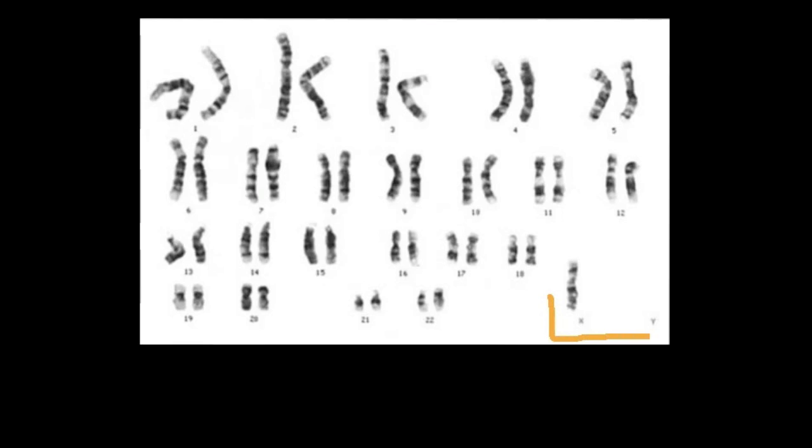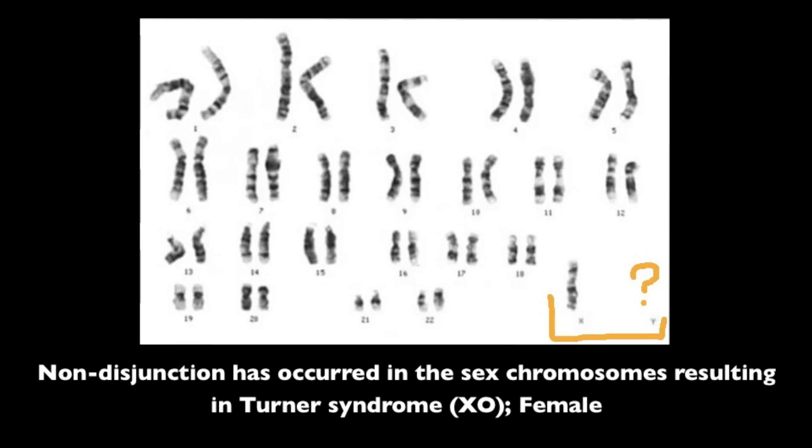Therefore, non-disjunction has occurred in the sex chromosomes resulting in just one X chromosome. This is represented as XO and results in Turner syndrome. With only one X chromosome and no Y chromosome, these individuals are genetically female.